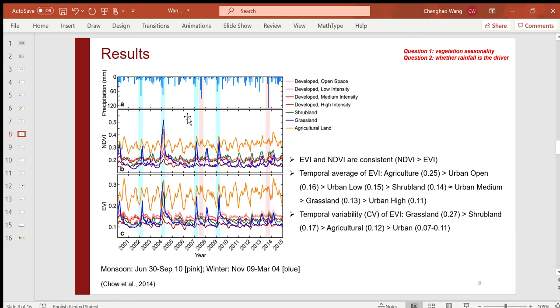Now let's take a look at the results. This figure shows the precipitation time series and temporal change of NDVI and EVI over different land cover types. Here the pink region marks the monsoon season with precipitation higher than 100 mm, and blue region is the winter season with high precipitation. In general, EVI and NDVI are quite consistent, although NDVI is a bit higher. On average, agriculture has the highest EVI, much higher than urban areas and shrubland. Grassland has the highest temporal variability, as suggested by the high value of coefficient of variation.